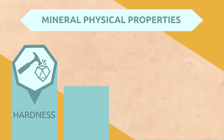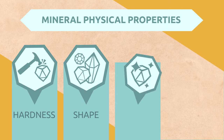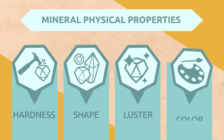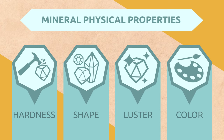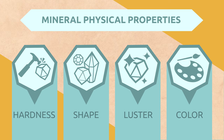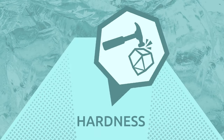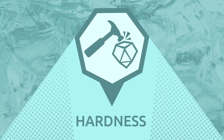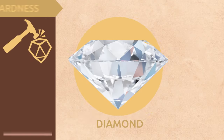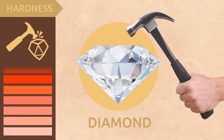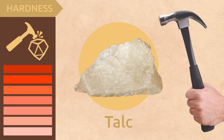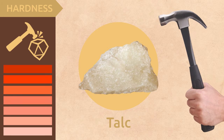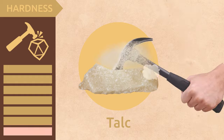Minerals are very different from each other and have important physical properties: hardness, shape, luster, and color. This one here is a diamond — the hardest mineral that exists. And this one is talc — the softest mineral.